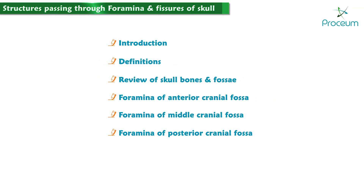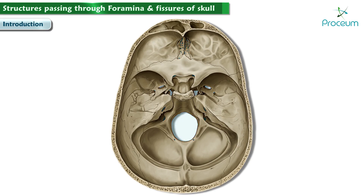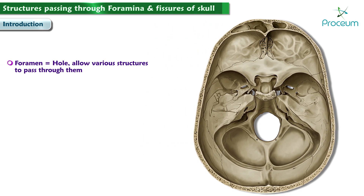Structures passing through foramina and fissures of the skull. In this video we'll be dealing with the foramina and fissures related to the skull. A foramen means a hole that can allow various structures to pass through them. The number of foramina and fissures which can be visualized at the base of the skull can be overwhelming upon the first look.